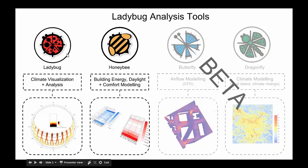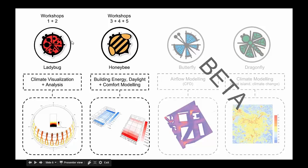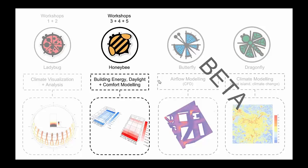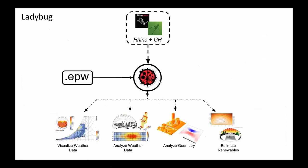Really the only things we're covering in the performance network series are Ladybug and Honeybee. We've already covered Ladybug in the first two workshops. Ladybug is just meant to visualize and analyze weather data using the Rhino-Grasshopper interface. Honeybee is this big node in a much larger network of software meant to do all these different things — it's a plug-in for the Rhino-Grasshopper interface, one of the most common interfaces that designers use for 3D modeling.